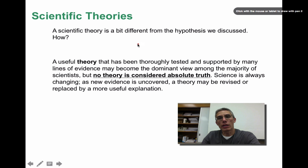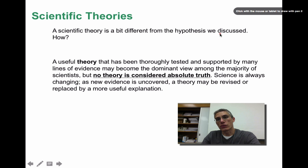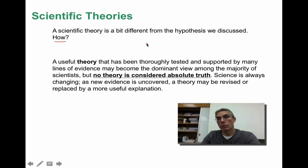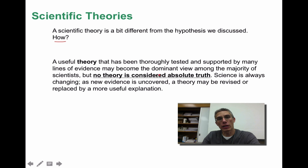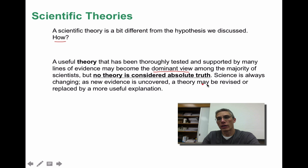Once something has been tested many, many times, we start to assume that's probably the reason why the observations are what they are. A scientific theory is different from a hypothesis. A theory has been tested maybe hundreds or thousands of times by different scientists, whereas a hypothesis is just our educated guess at that moment. A useful theory that has been thoroughly tested and supported by many lines of evidence may become the dominant view. But no theory is ever considered the absolute truth — science is always changing, and as new evidence is uncovered, a theory may be revised or replaced by a more useful explanation.